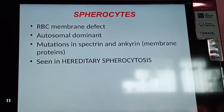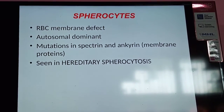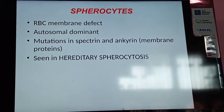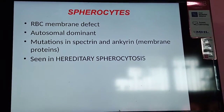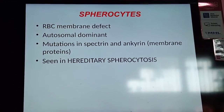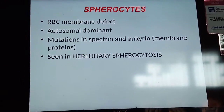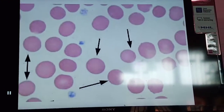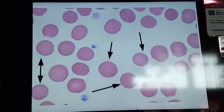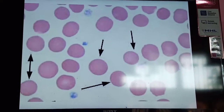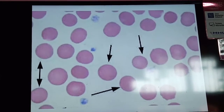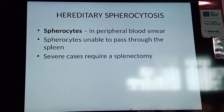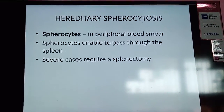Spherocytes have a spherical shape and are typically seen in hereditary spherocytosis. This condition occurs due to RBC membrane defects — an autosomal dominant disorder with mutations in spectrin and ankyrin, both membrane proteins of the red cell. The defect leads to spherocyte formation. In the blood picture, spherocytes show paucity of central pallor, with a globular shape and no central pallor. Spherocytes are unable to pass through the spleen, and hereditary spherocytosis may require splenectomy.